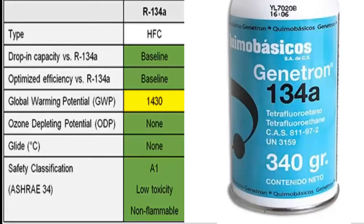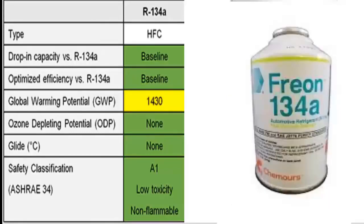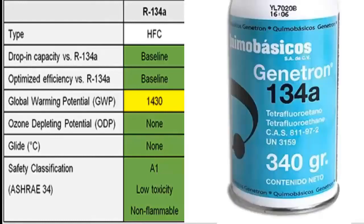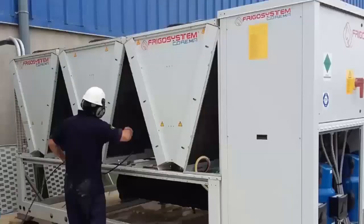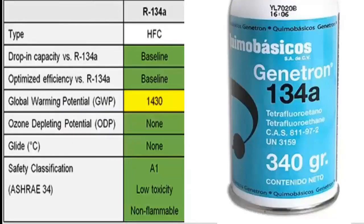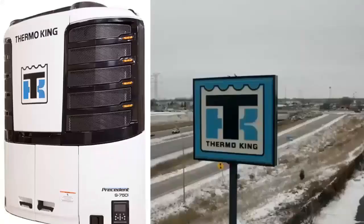7. R-134A is a refrigerant that replaces R-12 for automotive air conditioning and refrigeration and air conditioning equipment, which requires an oil change. 8. R-134A is widely used in domestic refrigerators. 9. R-134A refrigerant gas is widely used in screw and centrifugal type chillers. 10. Widely used by the companies Thermo King and Carrier in their refrigeration equipment for positive temperature transport.